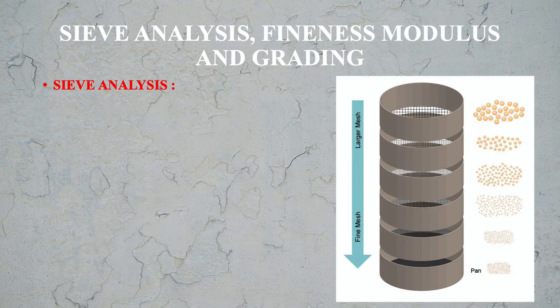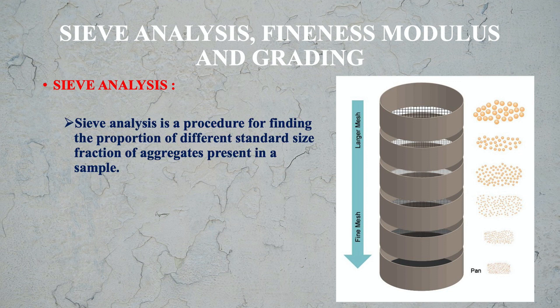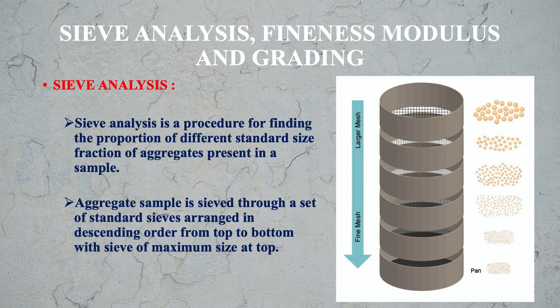Now let us move to Sieve Analysis, Fineness Modulus and Grading. Sieve analysis is a procedure for finding the proportion of different standard size fractions of aggregates present in a sample. The aggregate sample is sieved through a set of standard sieves arranged in descending order from top to bottom, with the sieve of maximum size at the top.